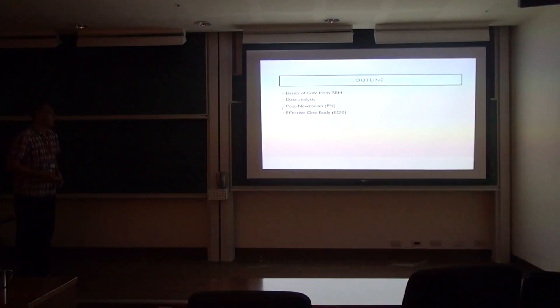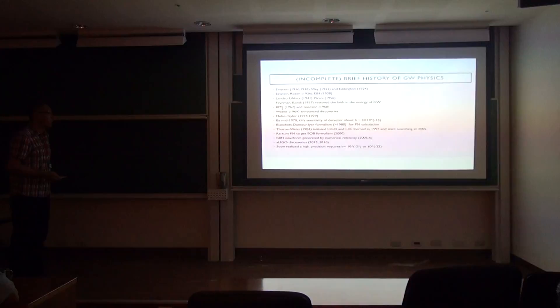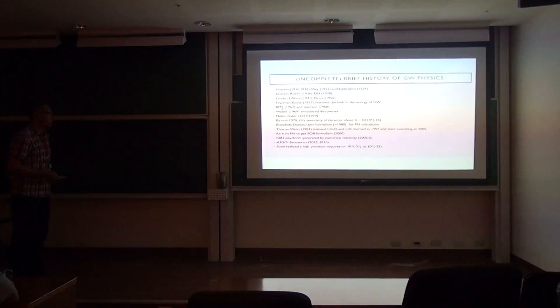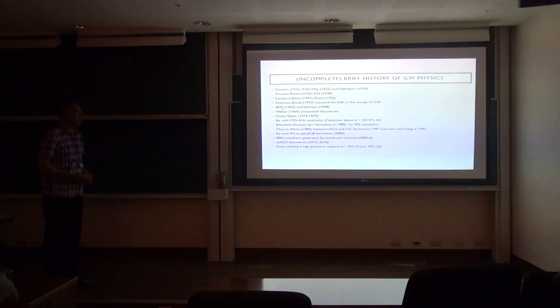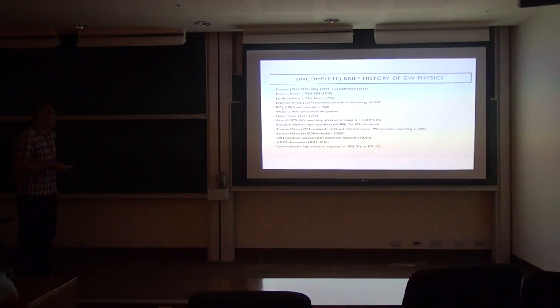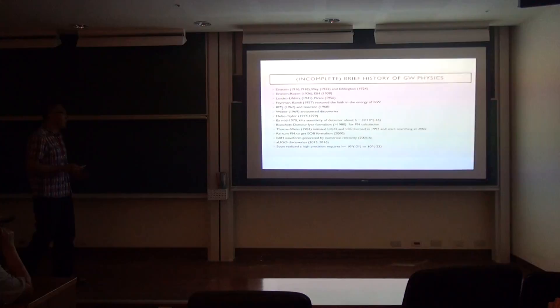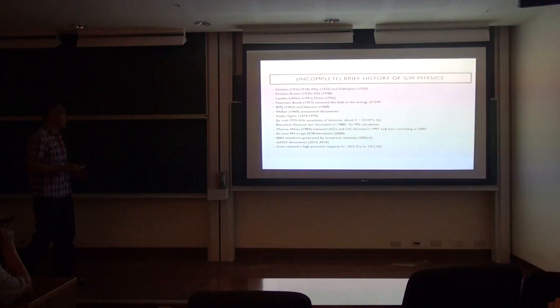A brief history of gravitational wave physics spans about 100 years. Einstein discovered the concept right after formulating general relativity, drawing an analogy with electromagnetic waves. Initially the theory was incomplete — early analysis seemed to suggest gravitational waves could propagate at any speed, which Einstein found nonsensical. This was later clarified and summarized by Weyl.